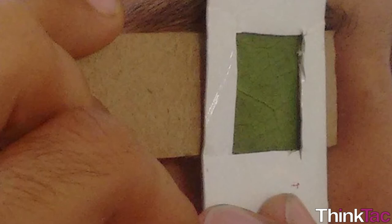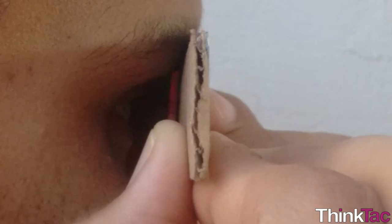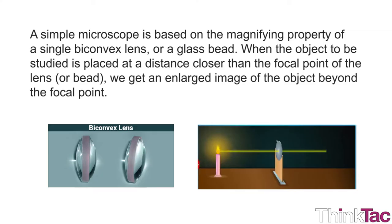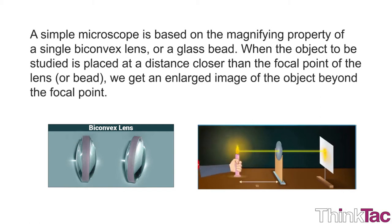Making a working microscope is a great thing and you should be proud of yourself for making one. What we have made today is a simple microscope, which is the practical outcome of the principles mentioned below. A simple microscope is based on the magnifying property of a single biconvex lens, or a glass bead. When the object to be studied is placed at a distance closer than the focal point of the lens — in this case a bead — we get an enlarged image of the object beyond the focal point.